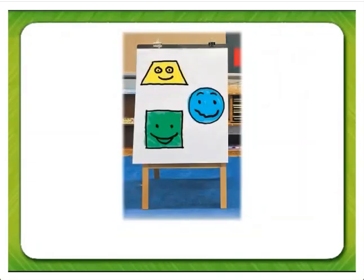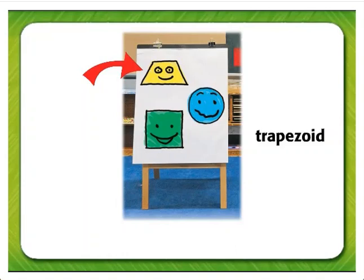This easel is Ella's. She has drawn three shapes. What is the name of the yellow shape on the top with the smiley face? It starts with the letter T.